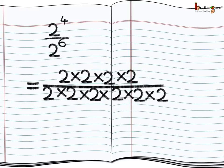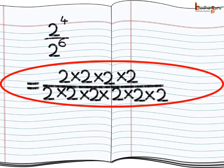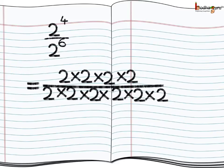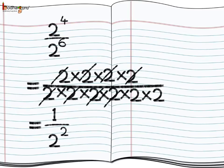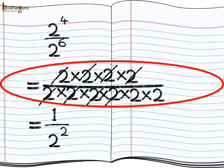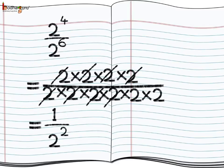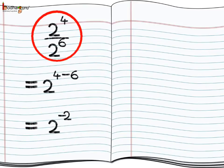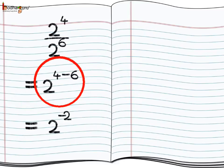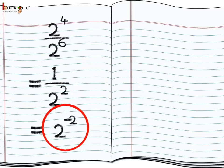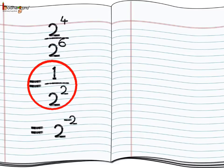Thus we can say 4 to the power minus 1 is same as 1 divided by 4. Same way, if we divide 2 to the power 4 by 2 to the power 6, we can break it down as 2 multiplied 4 times divided by 2 multiplied 6 times. To simplify, from the numerator and denominator, 4 twos cancel each other and 2 twos remain in the denominator, so we have 1 divided by 2 squared. Therefore, 2 to the power minus 2 is same as 1 divided by 2 squared.